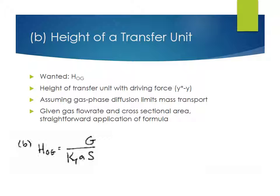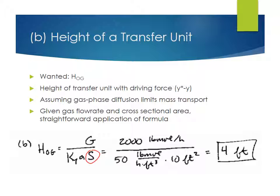Going back to the notes, HOG is given by the gas flow rate over capital KYA times S, which is the cross-sectional area of the column itself. So G is 2,000 pound moles per hour. KYA was just calculated in part A to be 50 pound moles per hour per cubic foot. And the cross-sectional area of the column is 10 square feet. So plugging in the numbers gives 4 feet as the height of a transfer unit. So that was a straightforward calculation.